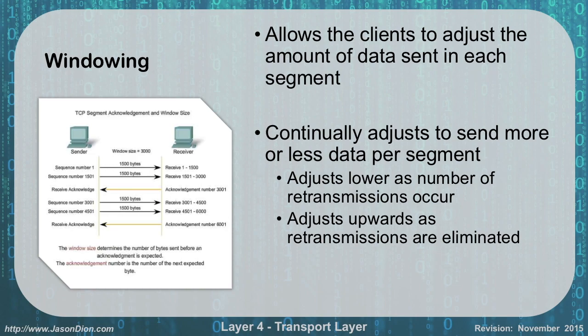With TCP, we have what's called windowing, and this allows the client to adjust the amount of data that is sent in each session. For instance, in the image the window size is 3,000 bytes. As it sends out sequence information of segments, it's going to send two segments of 1,500 bytes each. Once those are sent, the acknowledgement is received, two more are then sent, and the acknowledgement is received again. The window size is determined by the number of bytes before the acknowledgement is expected, and the acknowledgement number will go up by one. This window is continually adjusted so it can send more or less data for each segment.